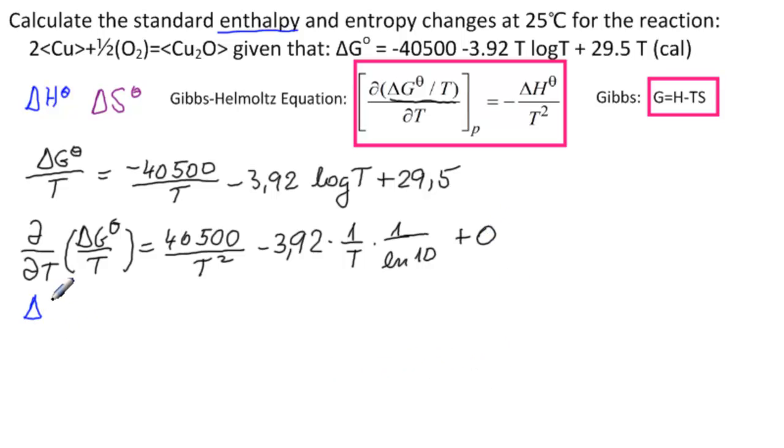So delta H theta equals minus T squared times this part here. We would have minus 40,500 plus 3.92 divided by LN of 10 times T. And we're interested in calculating this for T equal to 25 degrees Celsius,